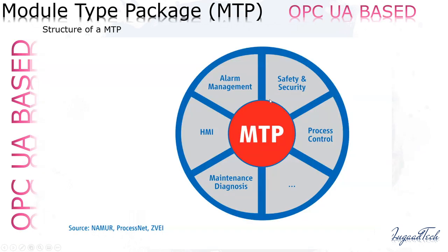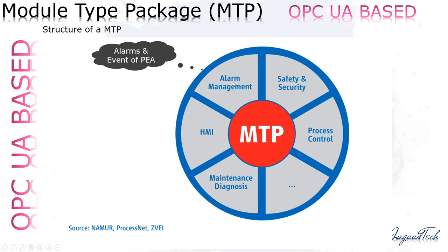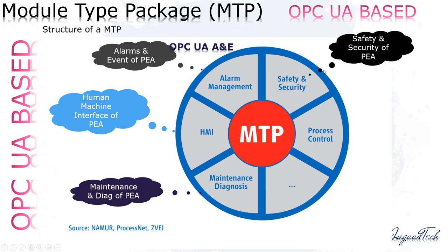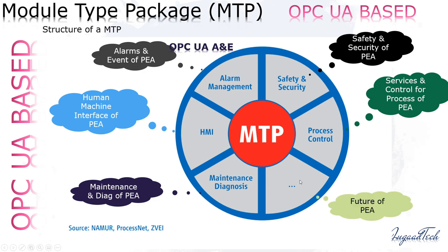So what NAMUR did — they introduced a new standard based on a standard architecture, the OPC UA architecture, and divided the whole thing into different small modules: alarm management, HMI, maintenance and diagnostics, safety and security, and process controls. Alarms and events of a PEA system will be based on OPC UA alarms and events. The HMI module handles the human-machine interface of a PEA. They have also kept some open slots for future PEA modules to be introduced.